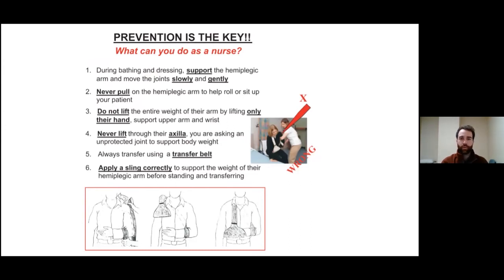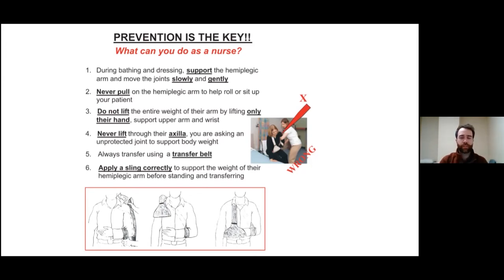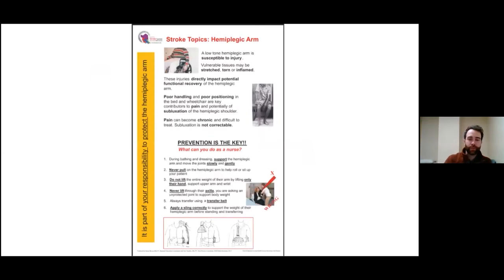The poster also covers: during bathing and dressing, support the hemiplegic arm and move the joints slowly and gently — never pull; do not lift the entire weight of the arm by lifting only their hand — use that two-handed approach, get control of the elbow; never lift them through their armpit as you're just asking an unprotected joint to support their body weight; always transfer using a transfer belt; and apply a sling correctly. The poster is available on the NEO Stroke Network website.